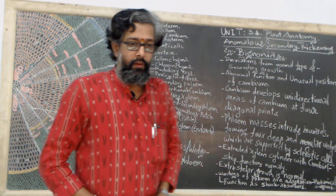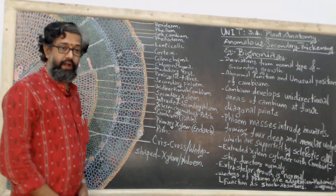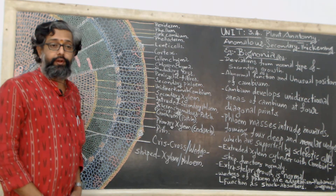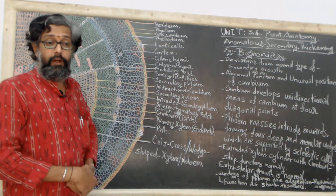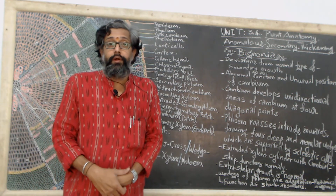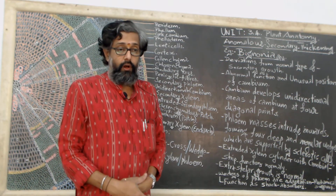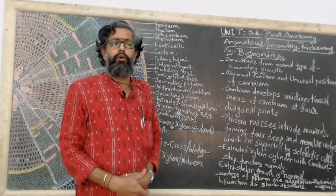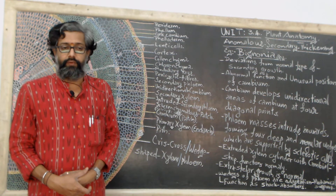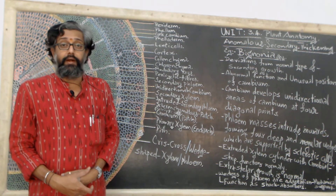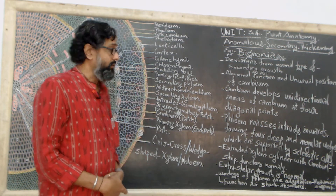Namaskaram. In this session we have explained about the anomalous secondary thickening in Bignonia system with the help of a diagrammatic representation. Here we can see from the last session how the appearance or background morphological nature or internal anatomical characteristic features are seen as a cross section while we go through the anatomical studies.